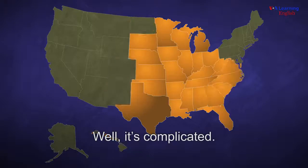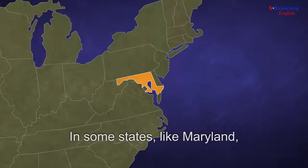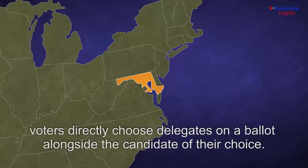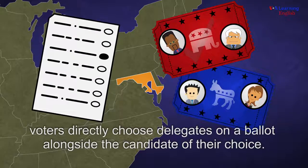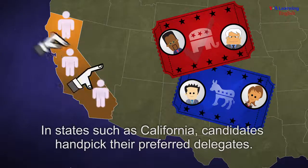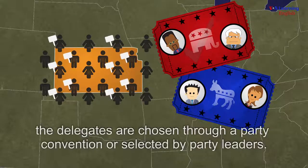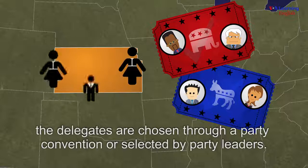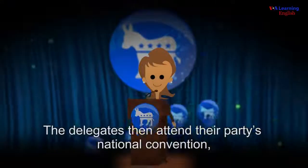Well, it's complicated. The rules are different for each state. In some states, like Maryland, voters directly choose delegates on a ballot alongside the candidate of their choice. In states such as California, candidates handpick their preferred delegates. In other states, such as Kansas, the delegates are chosen through a party convention or selected by party leaders.